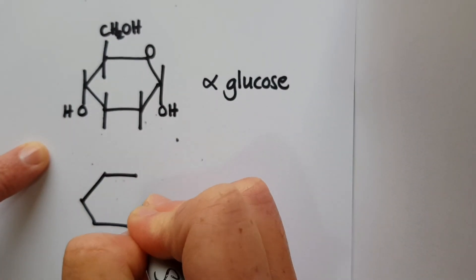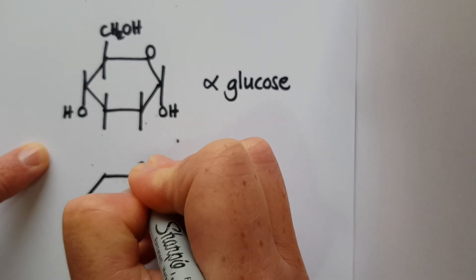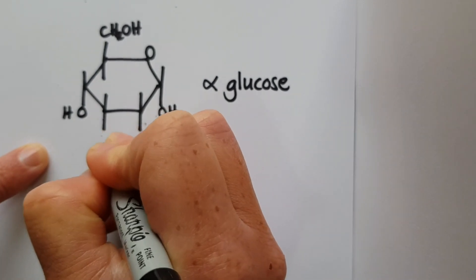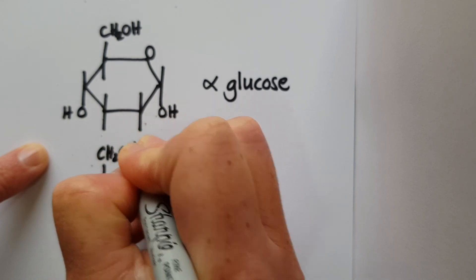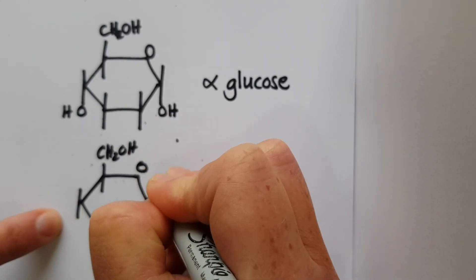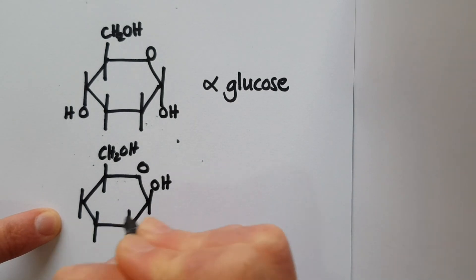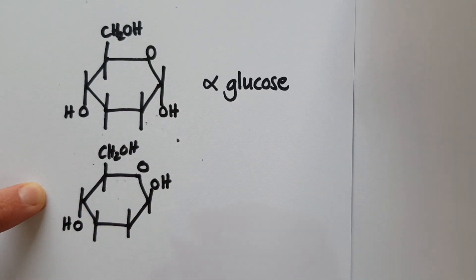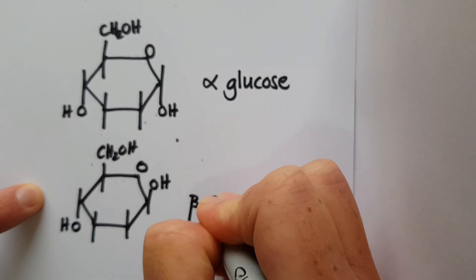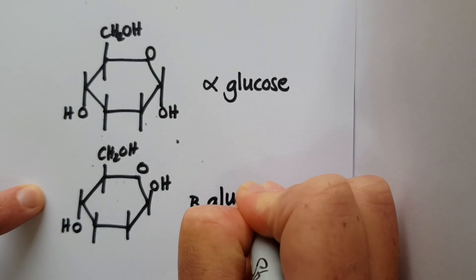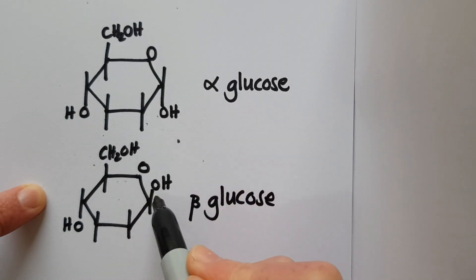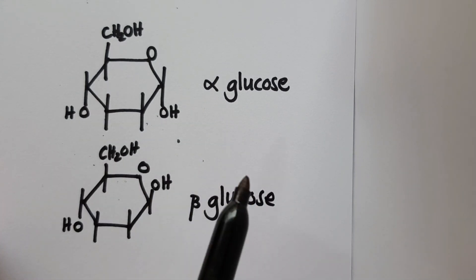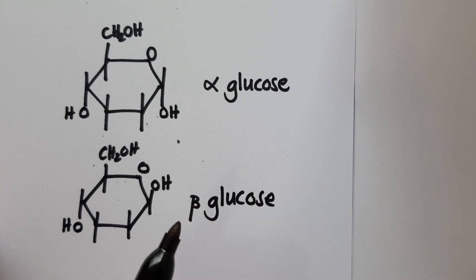And if I was then to draw the beta glucose, which you can see how much quicker this is here. Let me do CH2OH off the top and just show that the hydroxyl group here is actually pointing upwards, but still downwards at position four. And that's beta glucose. And that very small difference there actually has big knock-on effects in terms of the molecules that they can then go on to make.